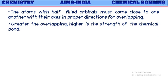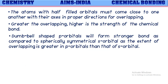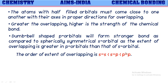The atoms with half-filled orbitals must come close to one another with their axes in proper directions for overlapping. Greater the overlapping, higher is the strength of the chemical bond formed. Dumbbell-shaped P orbitals will form a stronger covalent bond compared to spherically symmetrical S orbitals, as the extent of overlapping is greater in P orbitals than in S orbitals. The order of overlapping strength is shown here, with P orbital overlapping being greatest.